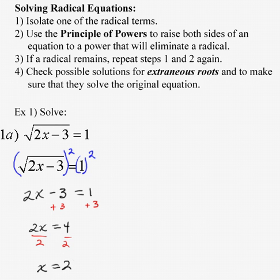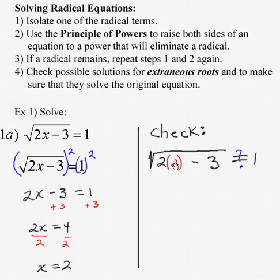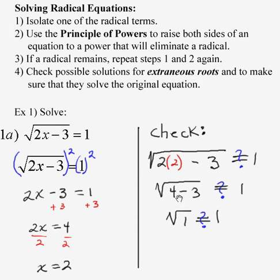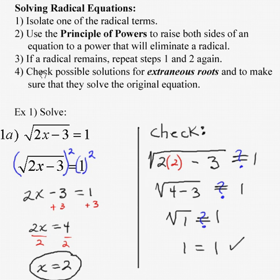We're not done yet — we need to check our answer. Replace x with 2 and see if it equals 1. 2 times 2 is 4. Simplify what's under the radical first: 4 minus 3 is 1, and the square root of 1 is 1. So my answer checks out and that's a solution. Make sure you do step four — check your solutions to make sure they work.